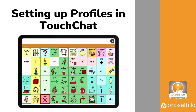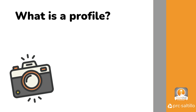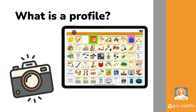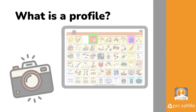You can set up profiles within TouchChat to easily switch between two vocabulary files and or settings at the touch of a button. A profile provides a snapshot of the current settings and vocabulary on the system, allowing them to be saved and easily accessed at a later time. Multiple profiles can be saved on a single device. A button can also be created to load a specific profile from within the vocabulary, minimizing the need to navigate through the menus.